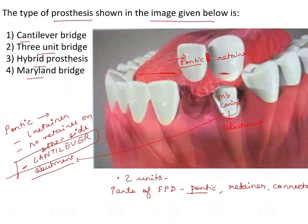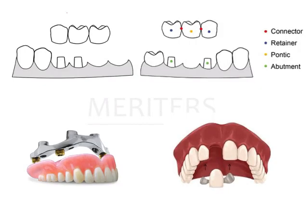The question can become confusing if you don't know the other options. A three-unit bridge is ruled out because we can see only two units. If you're unsure what a hybrid prosthesis is, let's look at images of the other restoration types. This is a three-unit cantilever bridge — the cantilever need not necessarily be two units only.